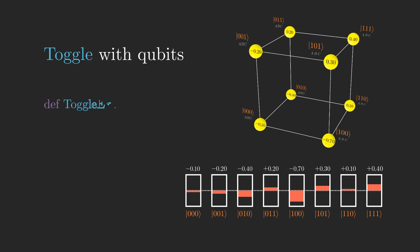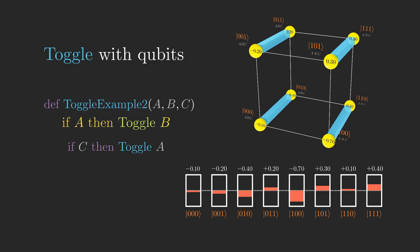For the instruction, if A equals 1 then toggle B, which we'll abbreviate from now on as if A then toggle B, we essentially do the same thing as a regular toggle B, but only for the corners where A equals 1.